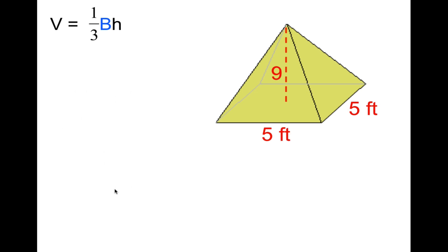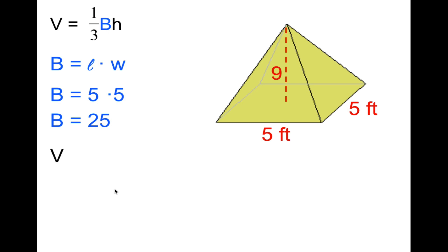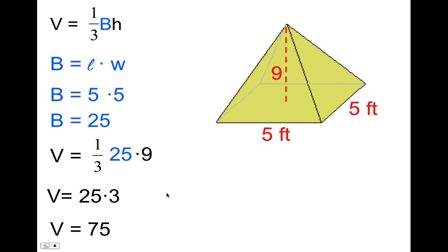The base is five feet by five feet. Base equals length times width, which is five times five, equaling twenty-five square feet. Plugging into the volume formula: V = (1/3) × 25 × 9. Using the commutative property, one-third of nine is three, so twenty-five times three equals seventy-five. The volume is seventy-five cubic feet.